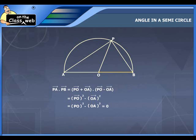Hence, PA vector is perpendicular to PB vector and angle APB is equal to pi by 2. Therefore, we conclude that the angle in a semi-circle is a right angle.